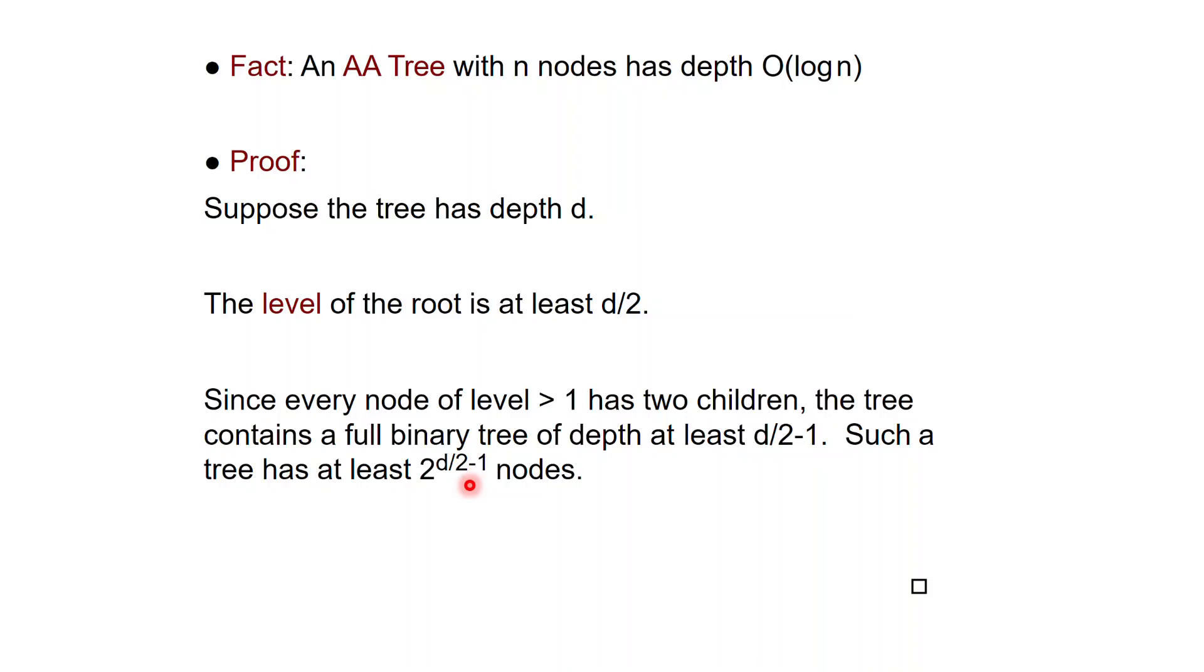A full binary tree of depth d over 2 minus 1 has at least an exponential number of nodes, 2 to the d over 2 minus 1. So this proof is not absolutely critical, but I wanted to show you how the definition is useful in proving this very important property.